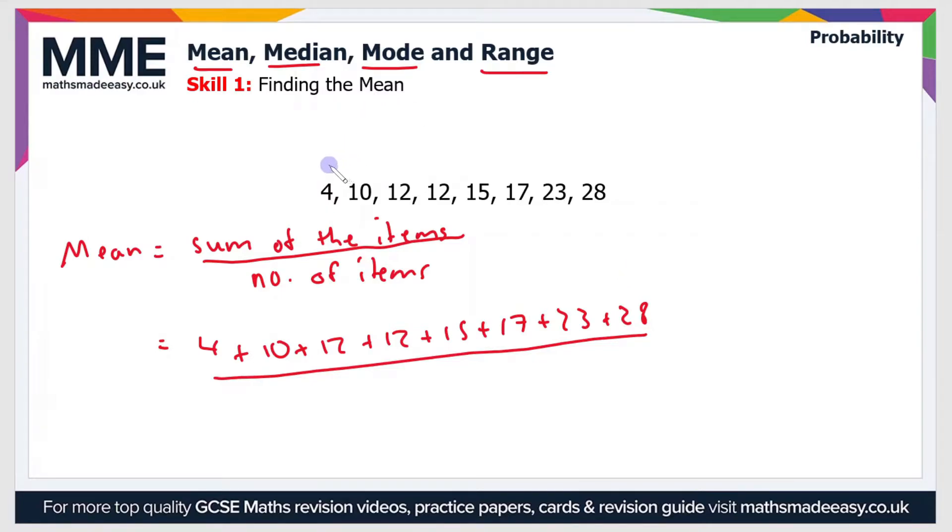So that's the number of numbers and we have 1, 2, 3, 4, 5, 6, 7, 8. So if you simplify that, that becomes 121 divided by 8, which gives us a value of 15.125 for the mean.